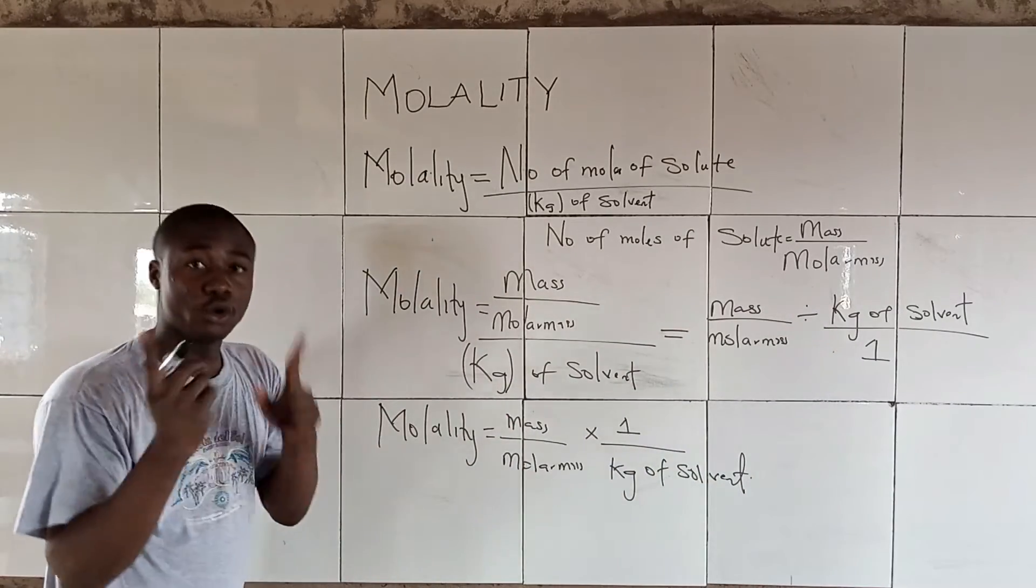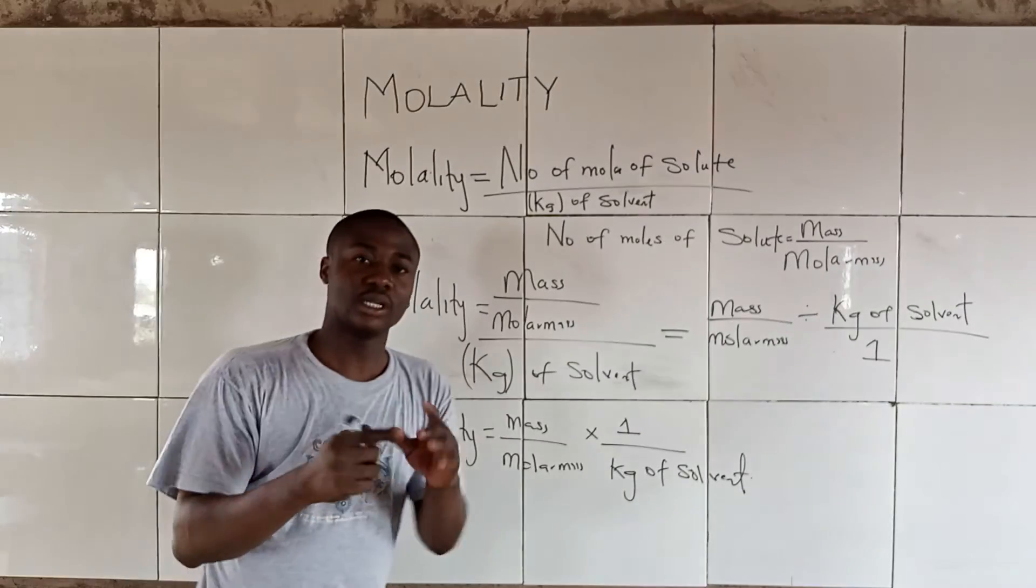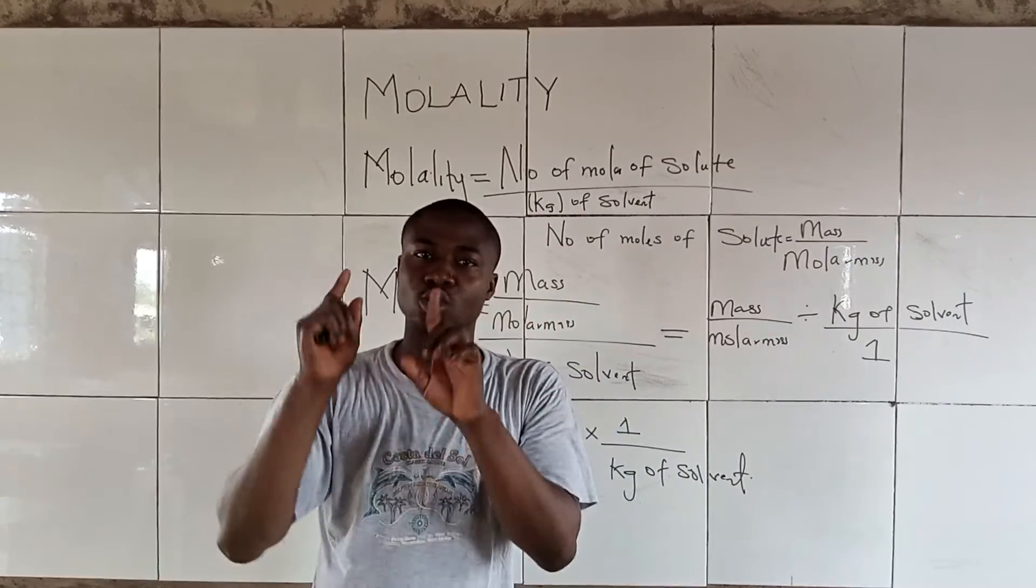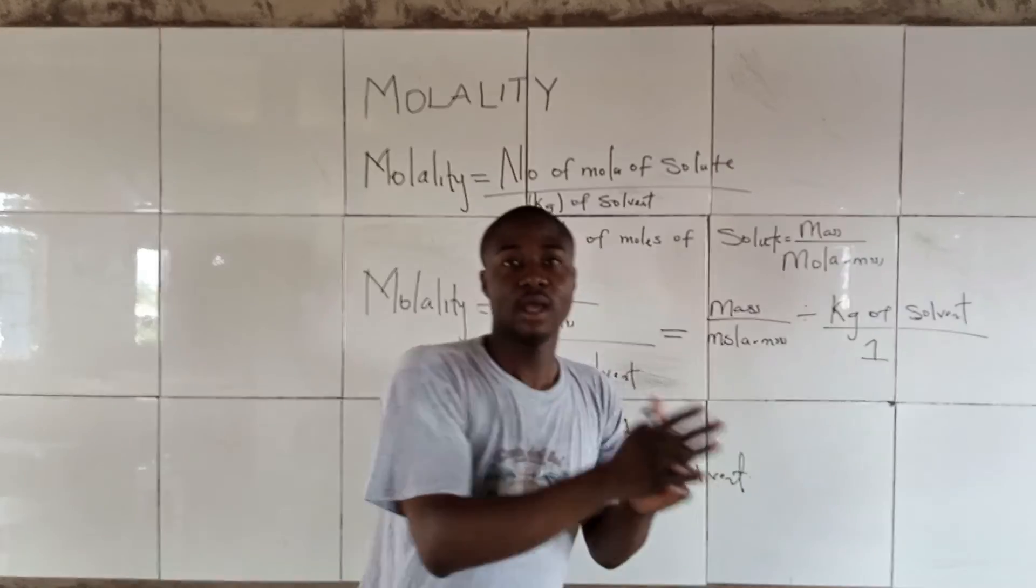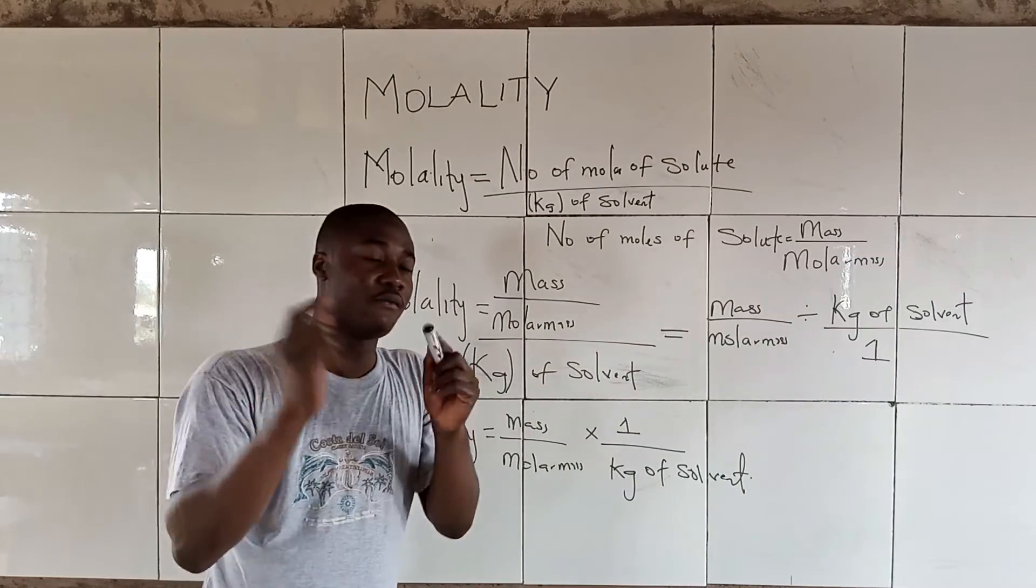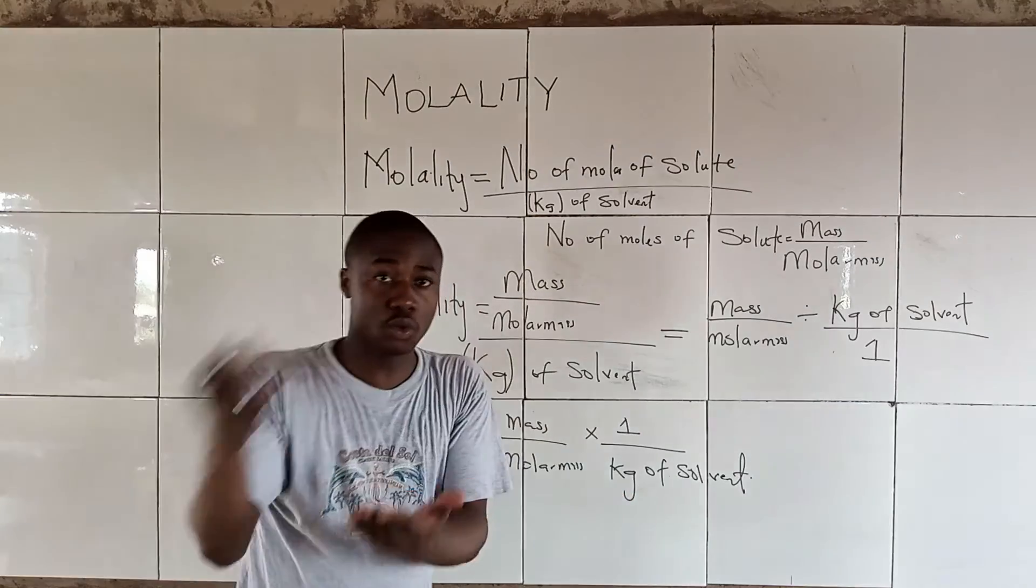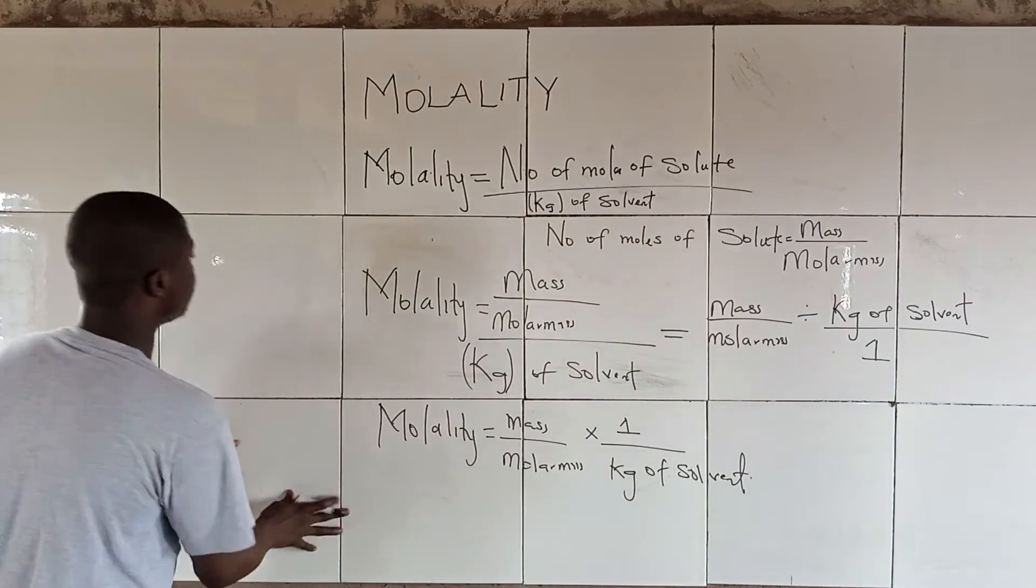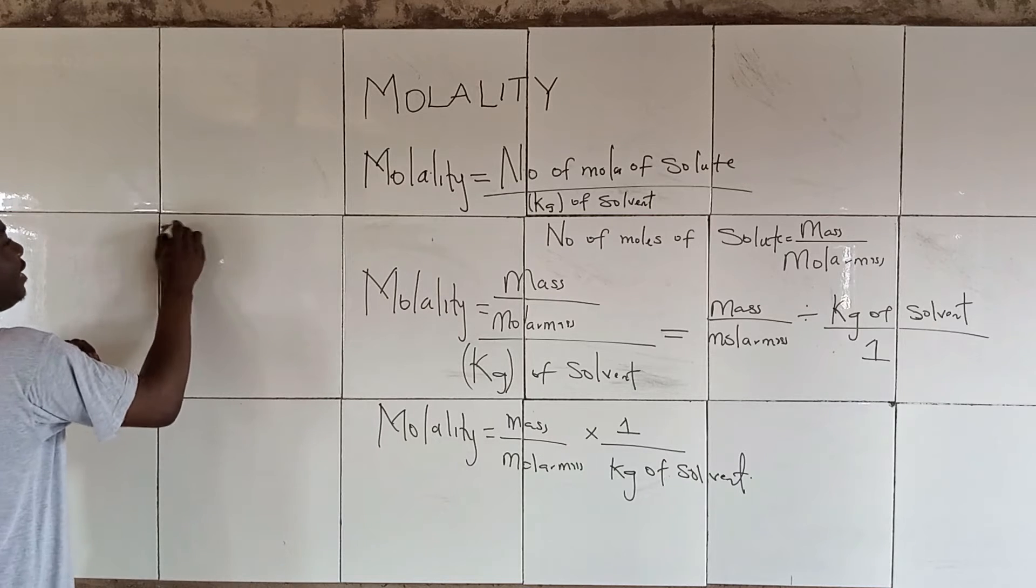Meanwhile, we should all know that in chemistry, our mass should be in grams, not in kilograms. So we simply convert the mass from kg to grams by adding 1,000, so it becomes something like this.